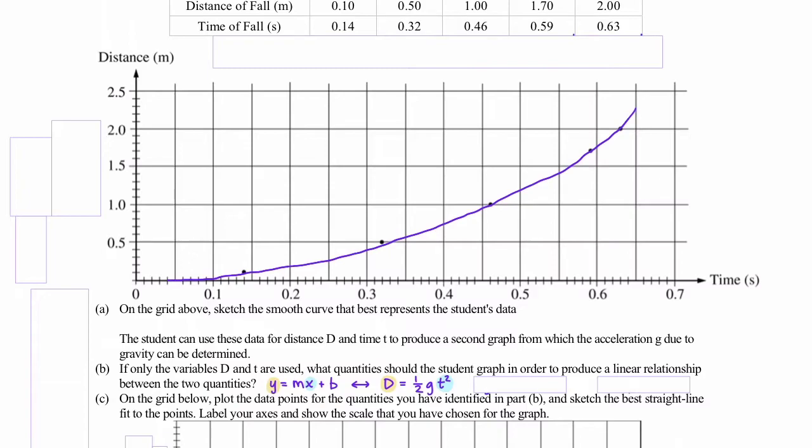That would also leave our slope to equal one-half g. So to answer the question, we'll say that the y-axis should plot d and the x-axis should plot t squared.